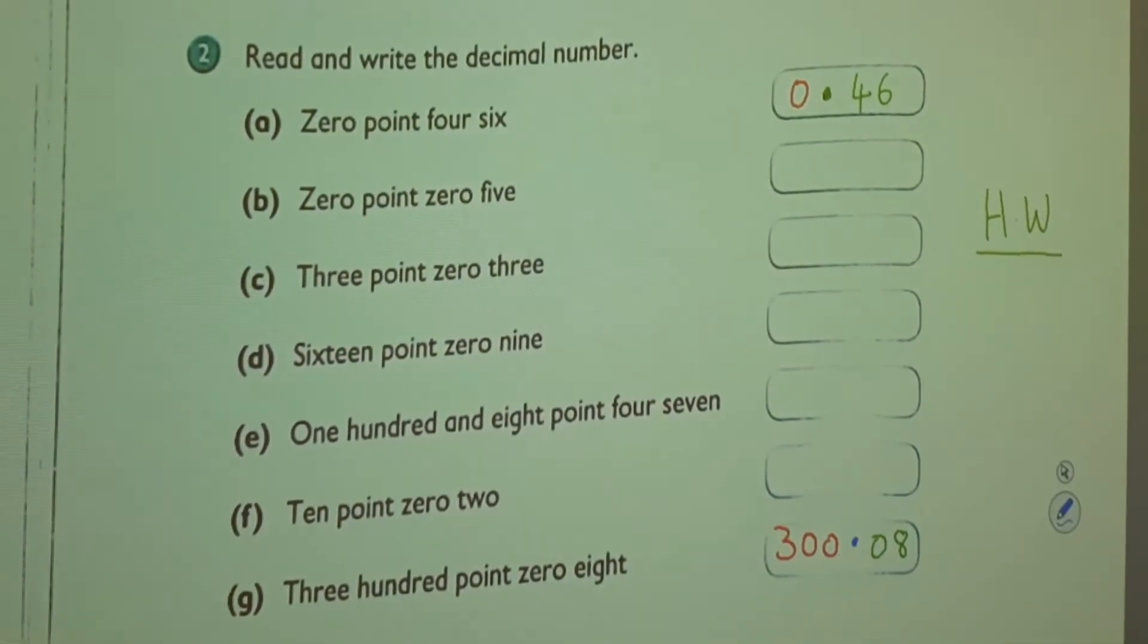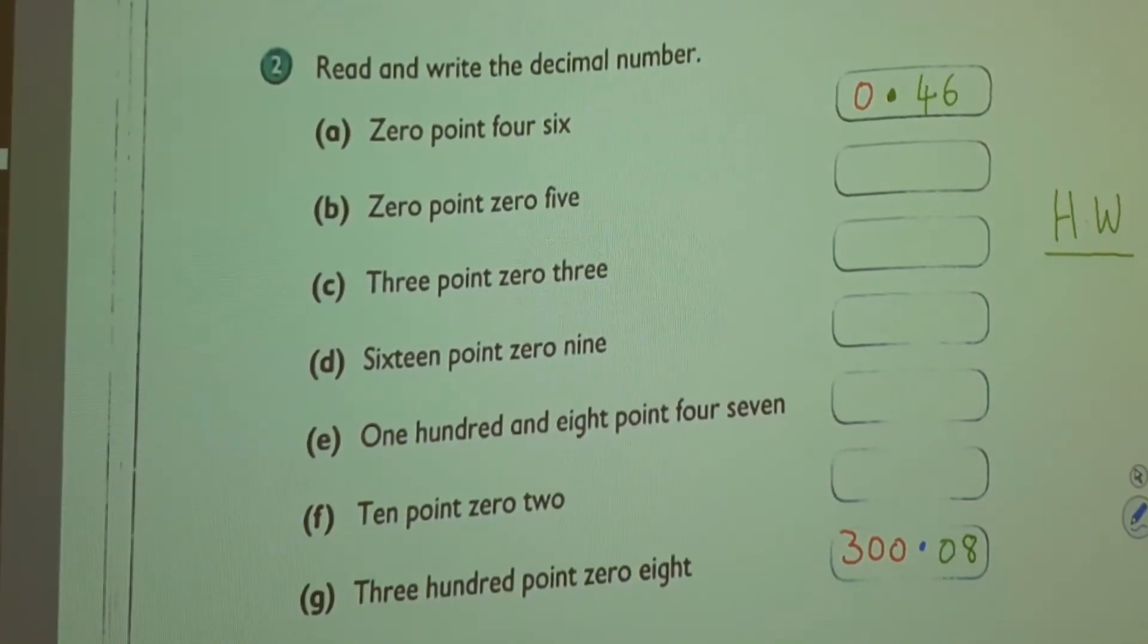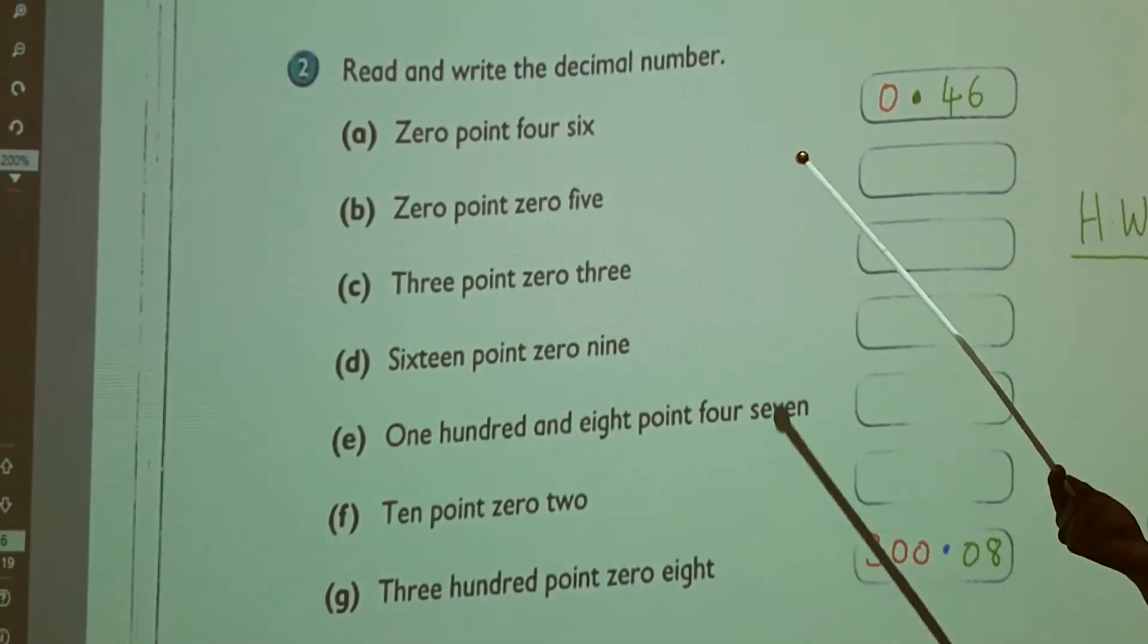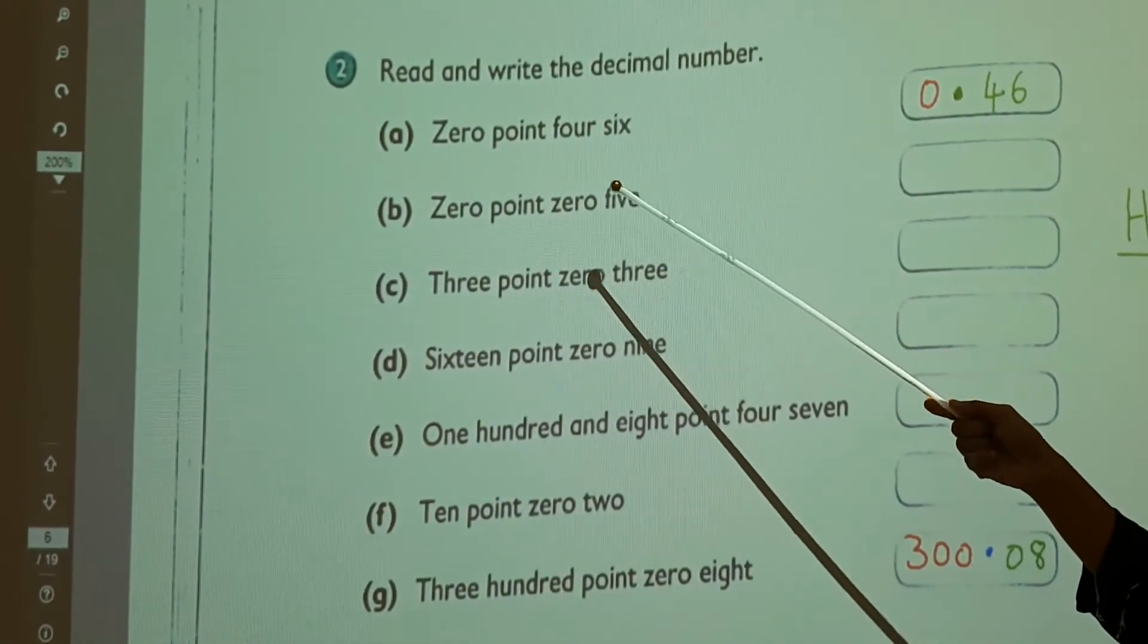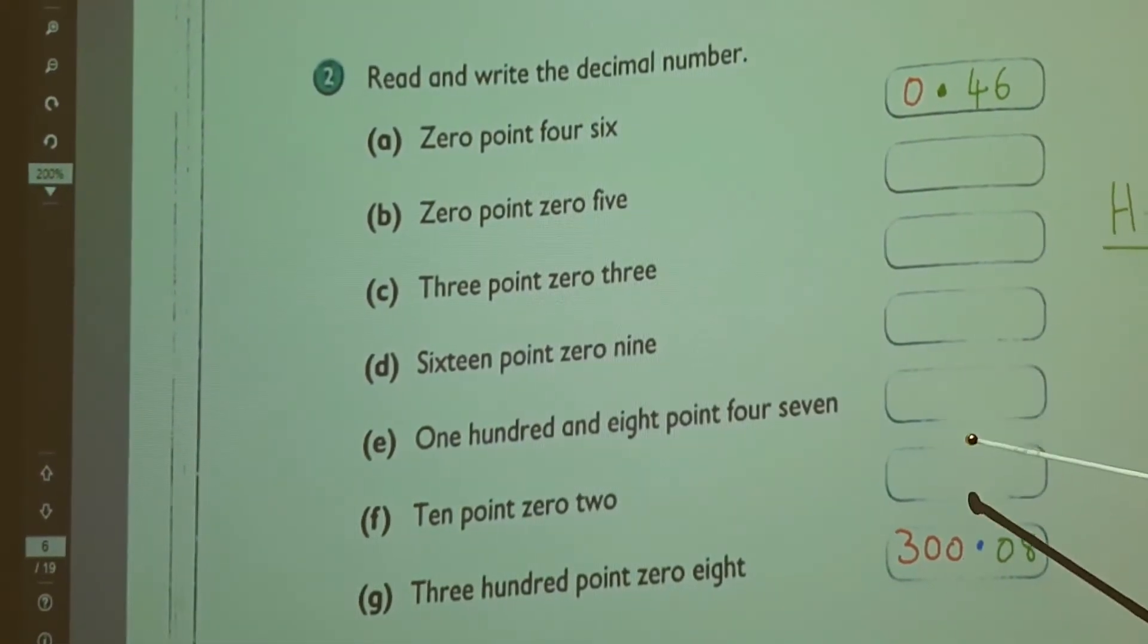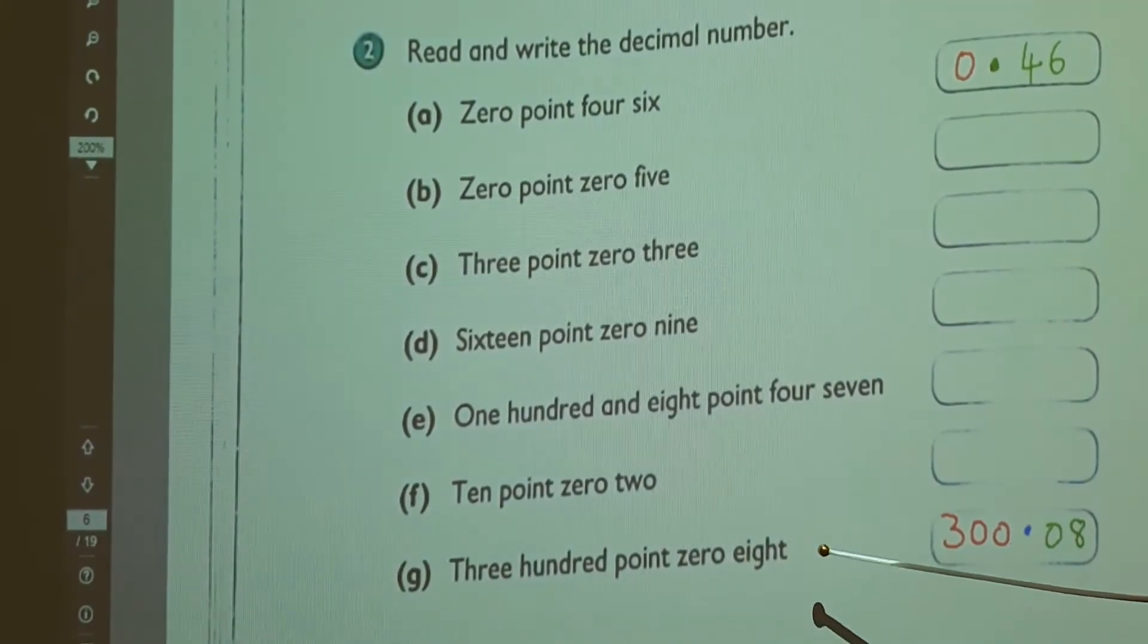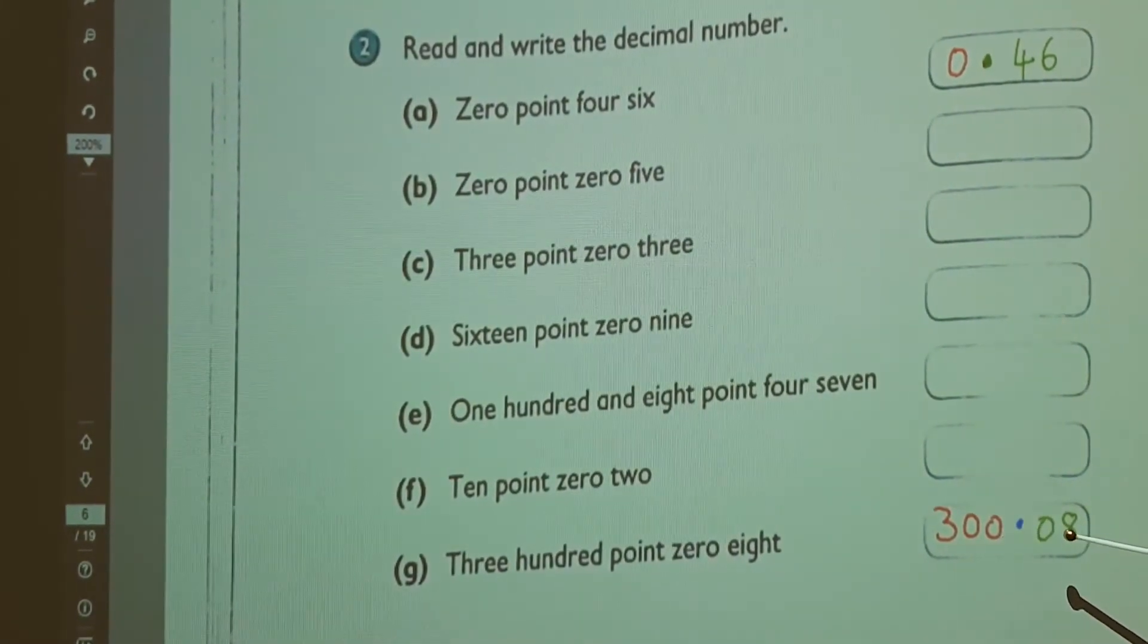What is question number 2? This also you do as homework. This is very easy for you. I will just give you two examples. Read and write the decimal numbers. 0.46, what's the number? 0.46. All of these numbers you can do like this. One more I will do for you: 300.08.